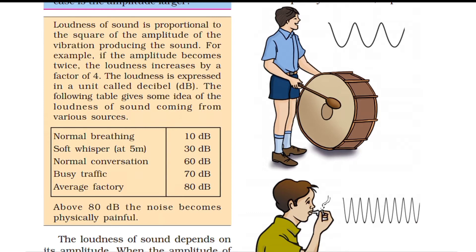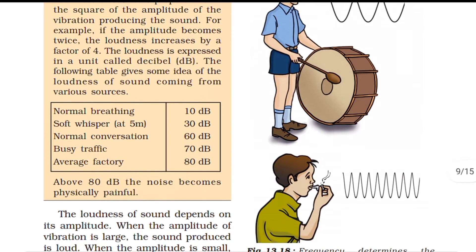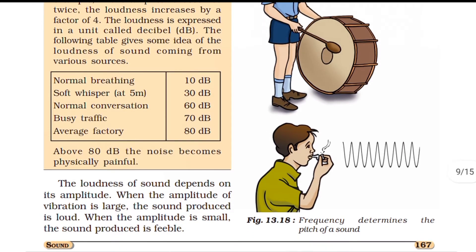Loudness is expressed in decibels (dB). Normal breathing is about 10 dB, a whisper is 30 dB, normal conversation is 60 dB, busy traffic is around 70 dB, and sounds above 80 dB can be physically painful — we call that noise.